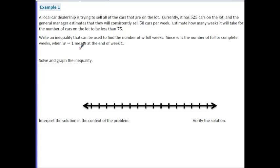So we're starting with 525 cars. If we're selling cars, the number of cars on the lot would reduce and they're reducing at a rate of 50 cars per week, which we would show as 50 times W. What we're looking for is the situation when this number of cars will be less than 75. So let's go through and solve this.